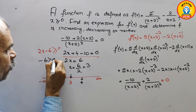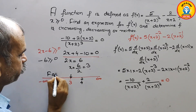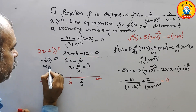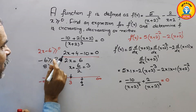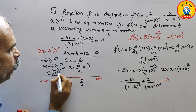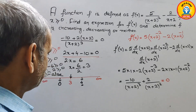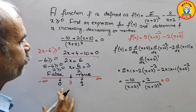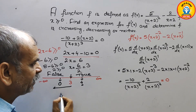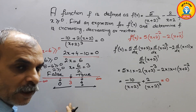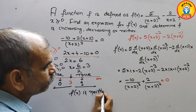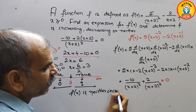Substituting x = 0 gives minus 6, and minus 6 is not greater than or equal to 0 — that is false. Next substitute x = 4: we get 8 minus 6 equals 2, and 2 is greater than or equal to 0 — that is true. So on one side it is decreasing and the other side it is increasing. Therefore we can say f(x) is neither increasing nor decreasing.